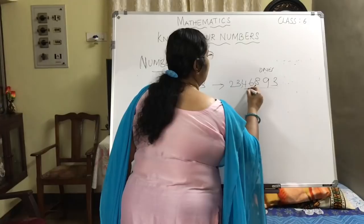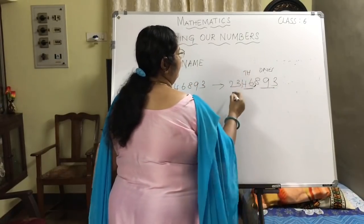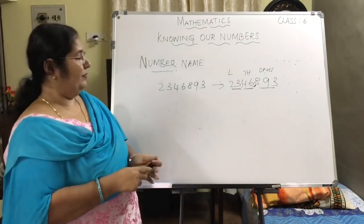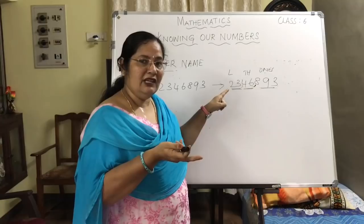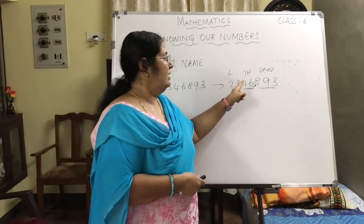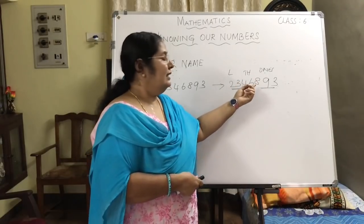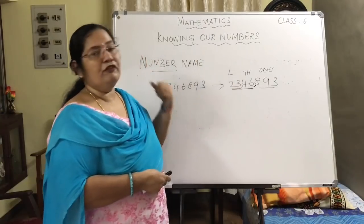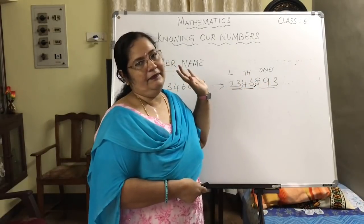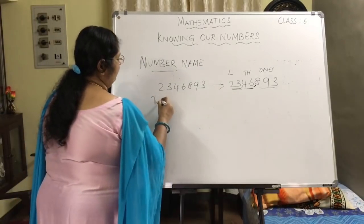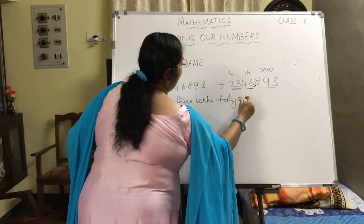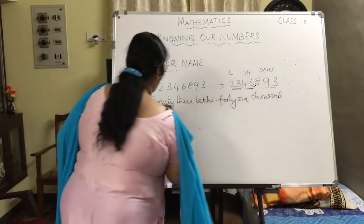Now you have some idea of which digits belong to which period. These digits belong to the ones period, these two digits to the thousands period, and these two digits to the lakhs period. In the lakhs period you have 23, so this is 23 lakhs. In the thousands period you have 46, so 46,000. And in the ones period you read it as 893. So the number name for this is twenty-three lakh forty-six thousand eight hundred and ninety-three.